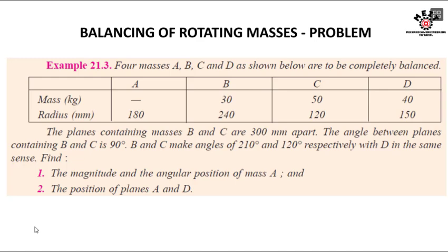The planes containing masses B and C are 300 mm apart. The angle between the planes containing B and C is 90 degrees. B and C make angles of 210 degrees and 120 degrees respectively with D in the same sense.